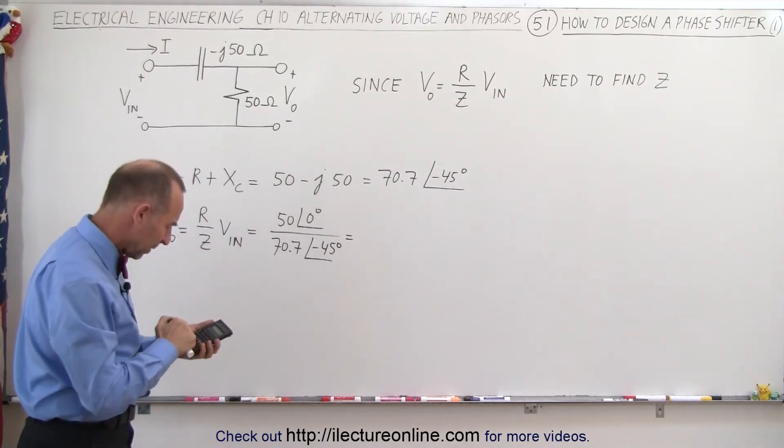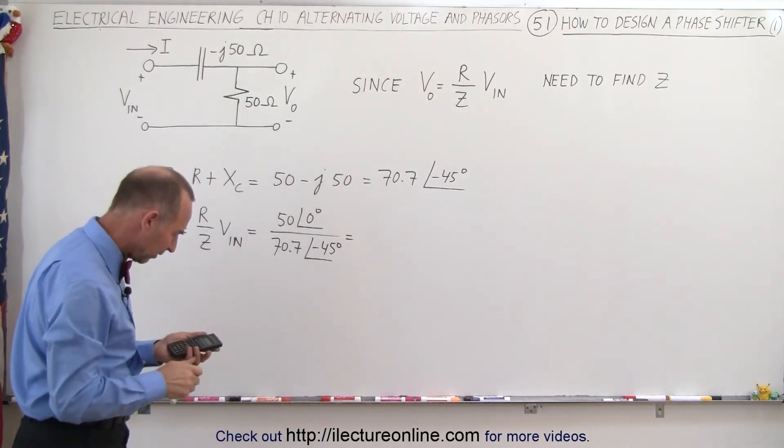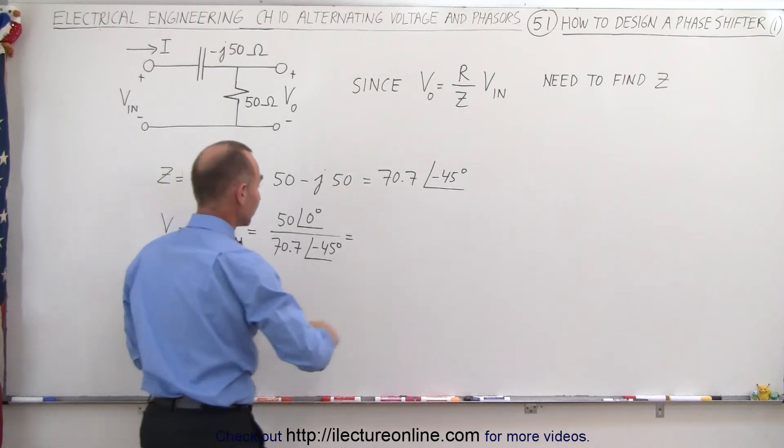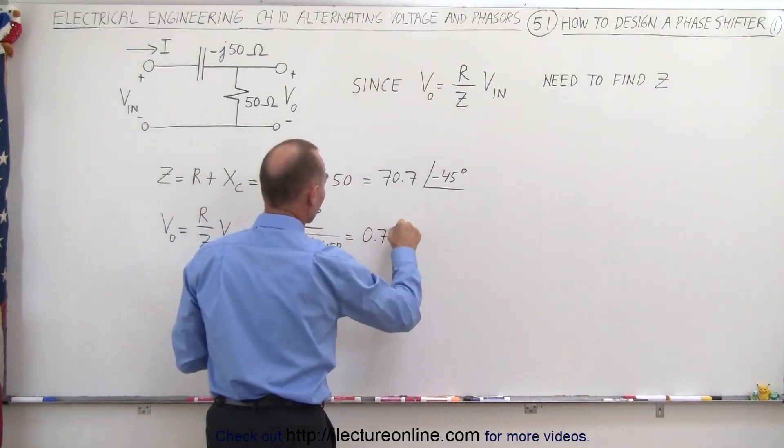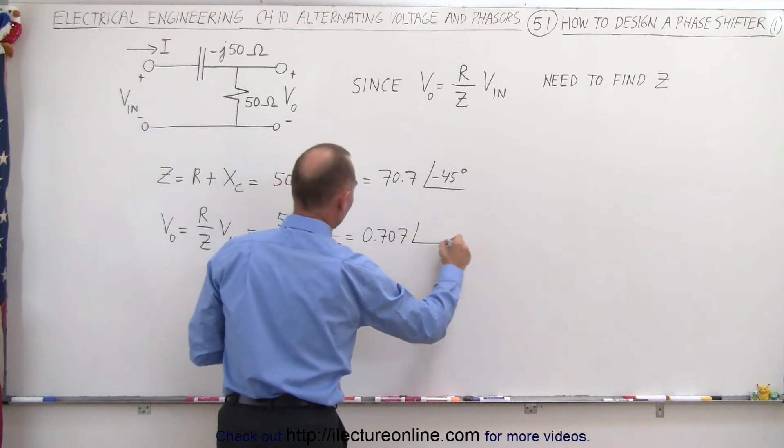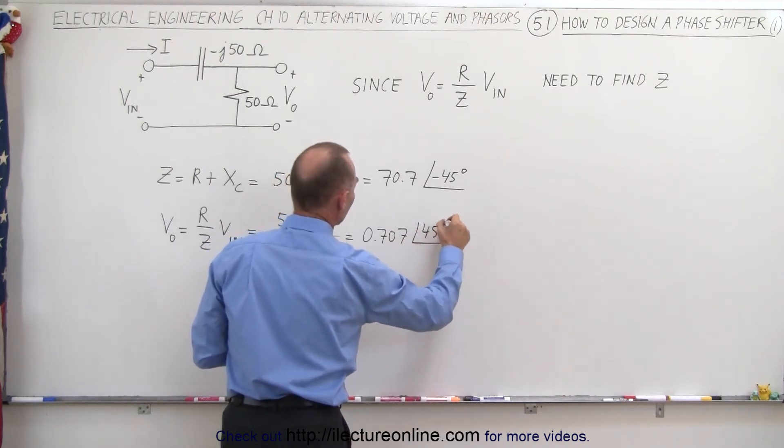And so when we calculate that, 50 divided by 70.7, that gives us 0.707, 0.707 times the phase angle of a positive 45 degrees,